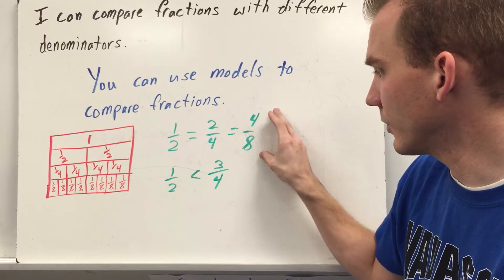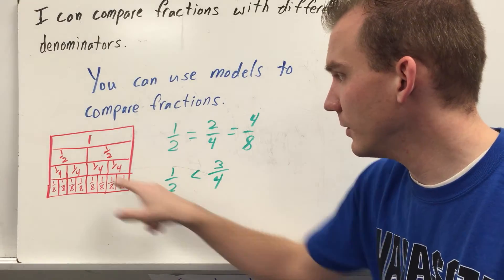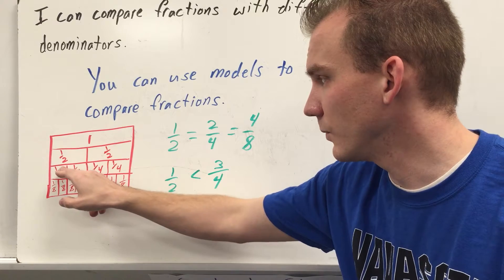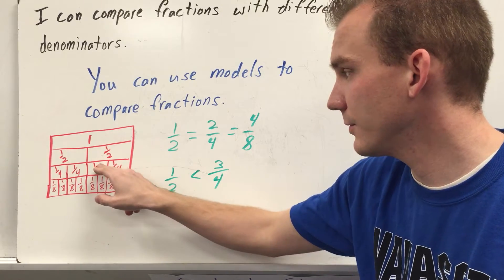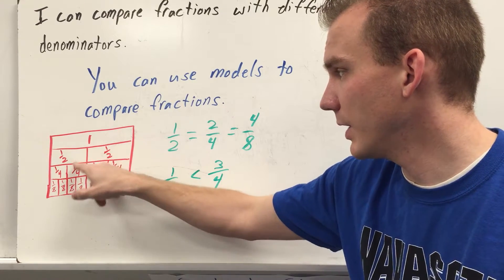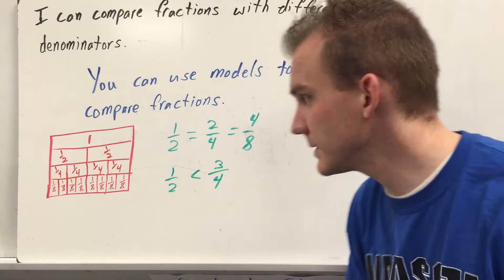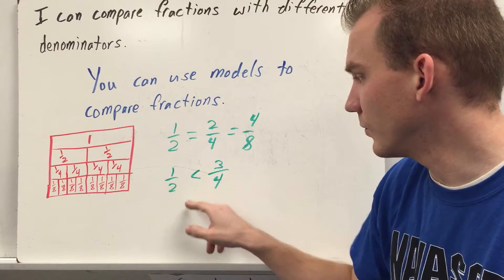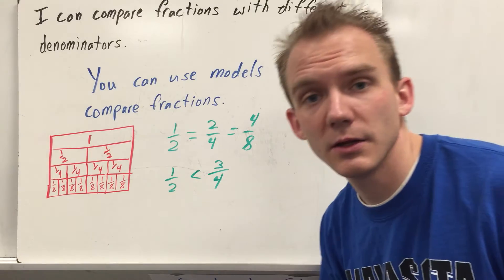So all three of these fractions are equivalent. And then you can also compare, say, 1 half to 3 fourths. 1, 2, 1, 2, 3. So you have 3 fourths ends here and 1 half is here. 3 fourths has more space. So 3 fourths is greater than 1 half or 1 half is less than 3 fourths.